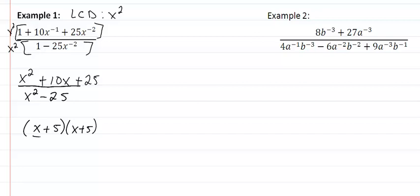The denominator is a difference of squares so we have x plus 5, x minus 5. Oops that was supposed to be minus.